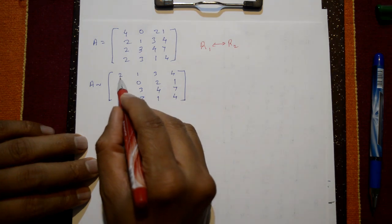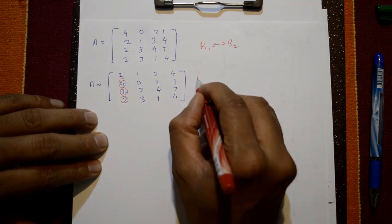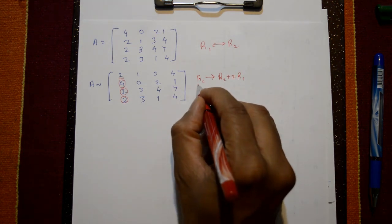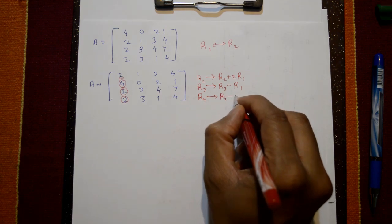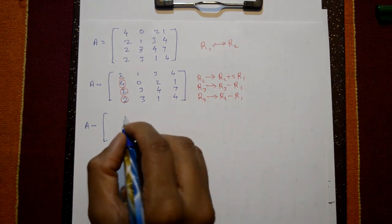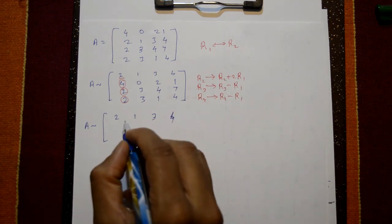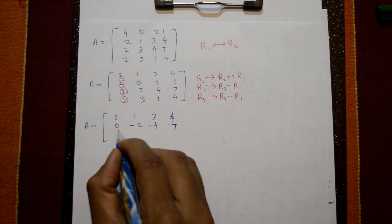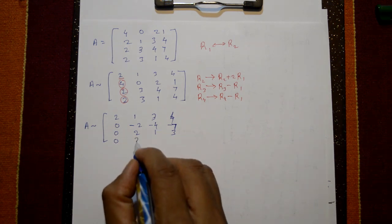After interchanging R1 and R2, the equivalent matrix has first row 2, 1, 3, 4 and second row 4, 0, 2, 1. Now with leading number 2, we zero out the column below using: R2 = R2 - 2R1, R3 = R3 - R1, R4 = R4 - R1. This gives R2: 0, -2, -4, -7; R3: 0, 2, 1, ... and R4: 0, 2, -2, 0.